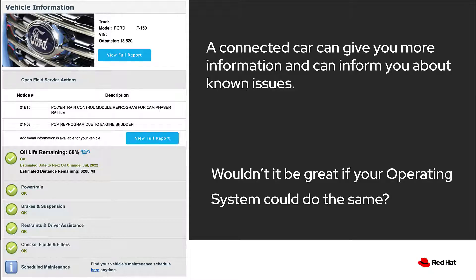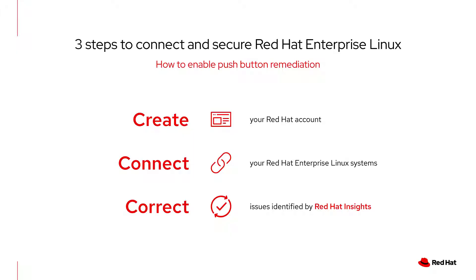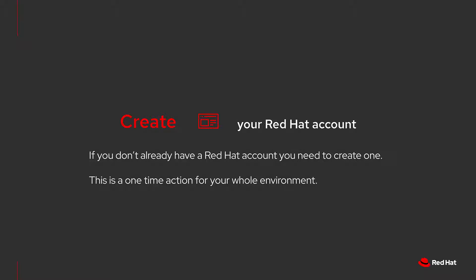Wouldn't it be great if your operating system could give you this type of information and more? We're going to share how three little steps can give you this type of information for your Red Hat Enterprise Linux systems, and we can even fix it for you with the press of a button. This functionality is included with your Red Hat Enterprise Linux subscriptions, so there is nothing more to buy. Just create, connect, and correct.